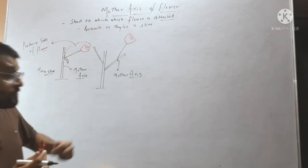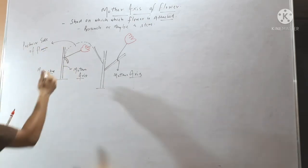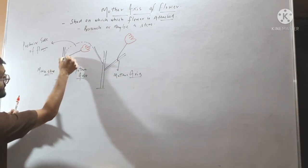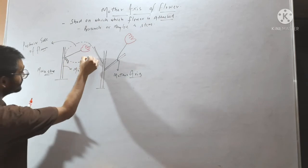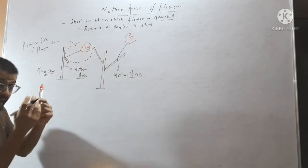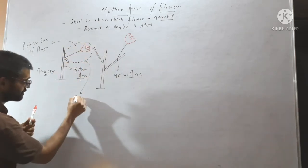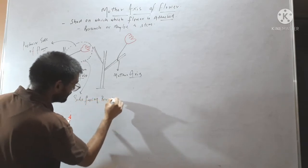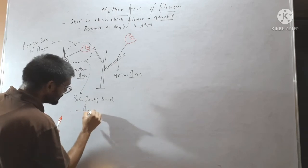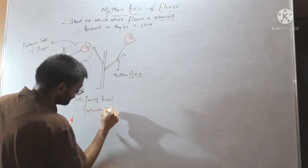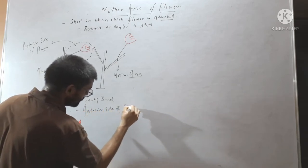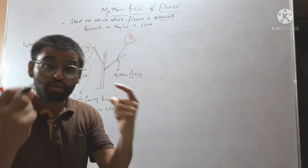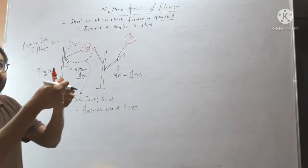The side facing towards the bract — the lower side relative to the mother axis — is called the anterior side of the flower. So, in summary, the mother axis is the shoot on which the flower is attached.